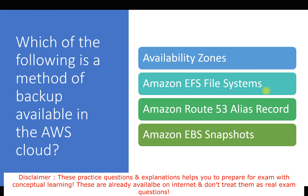Next is Amazon Route 53 alias record. Route 53 is a DNS service in AWS. An alias record is a type of record that maps a public domain name to an AWS service target — so it is a redirecting/DNS service, not a backup solution.